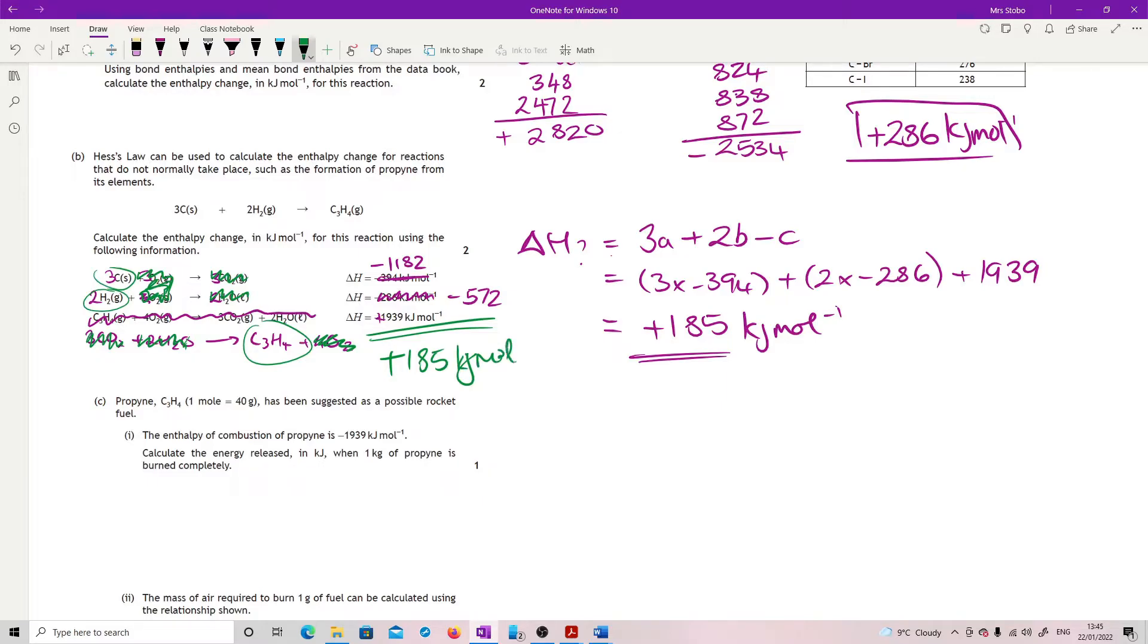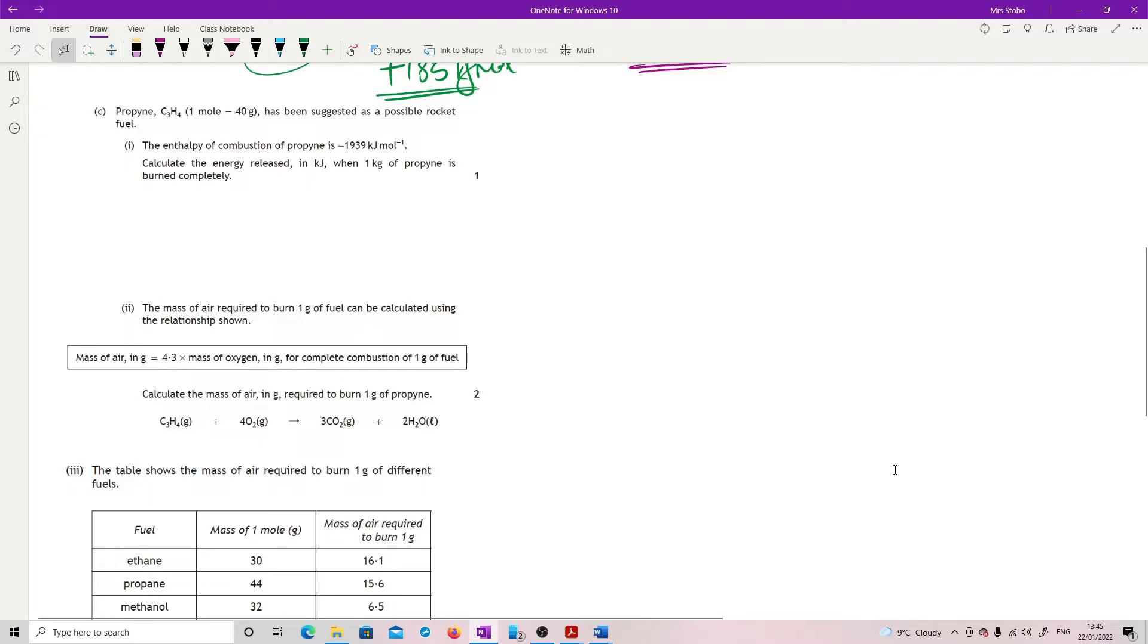Whichever way you like, it's all good. Right. Propine has been suggested as a possible rocket fuel. The enthalpy of propine is minus 1939 kilojoules per mole. Calculate the energy released in kilojoules when one kilogram of propine is burned completely. Right, it's only worth one mark because you're just basically proportioning up. So it's not giving you a lot of marks for that one. So what we've got is that one mole, 40 grams, would give us 1939. And we're looking for a kilogram. So 1000 divided by 40 times by 1939 gives us 48475 kilojoules. One mark. You can see why it's one mark.